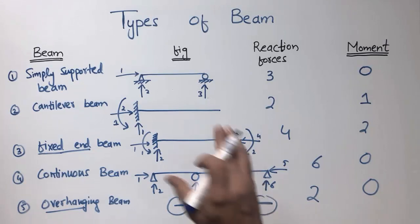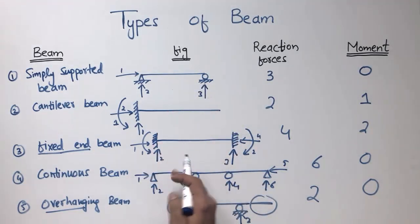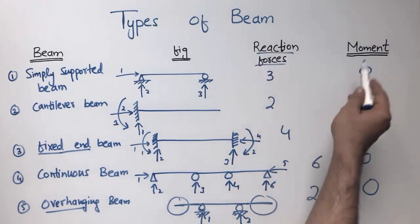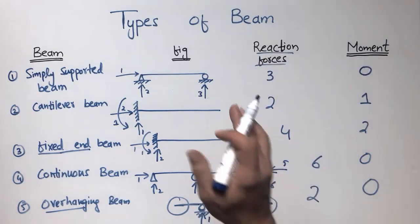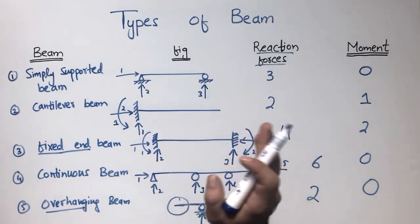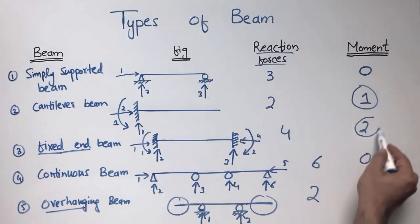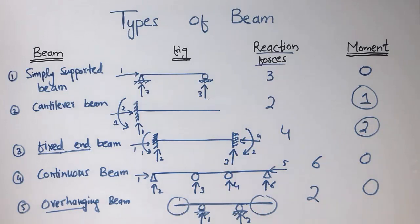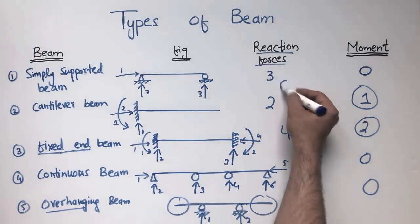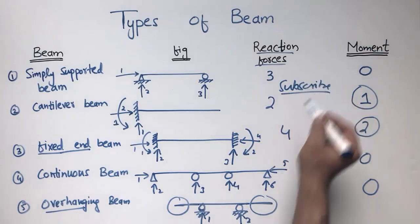I hope you understand the different types of beams, their shapes, how they look, and what the support reactions are, along with their moment capacities. Whenever there is a fixed support in a beam, it will always resist moment. This was all about today's topic — don't forget to subscribe for more engineering videos.